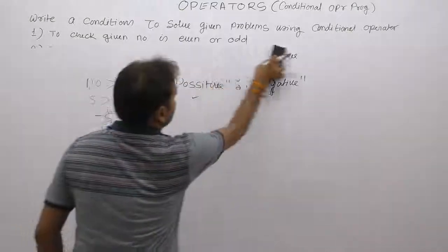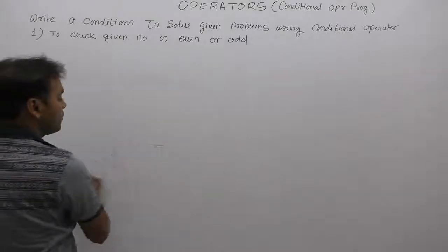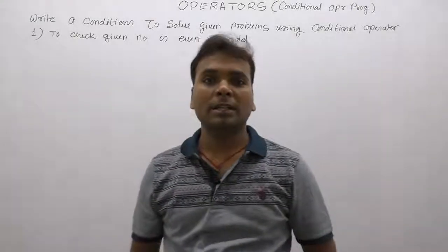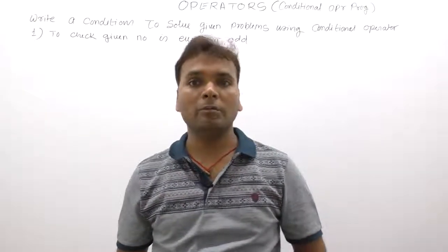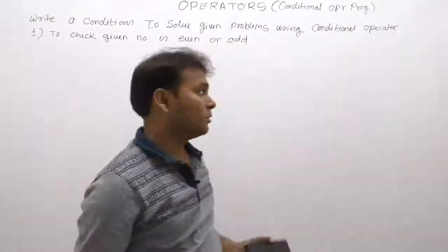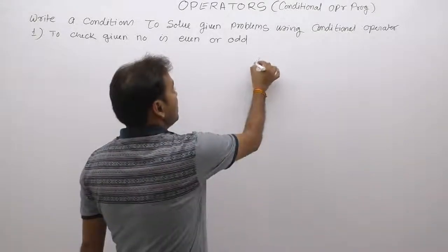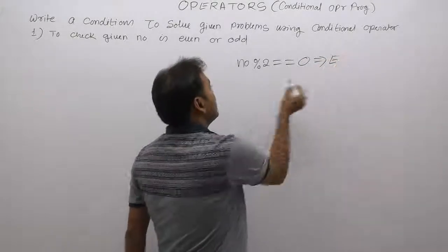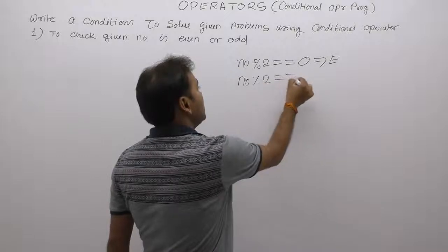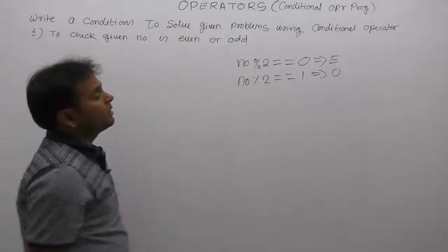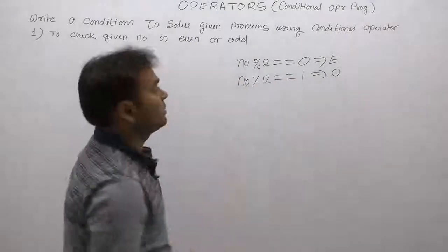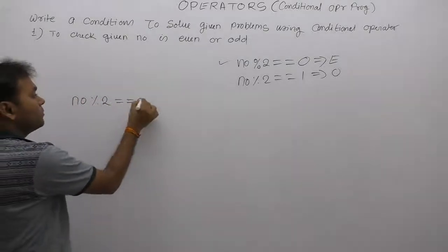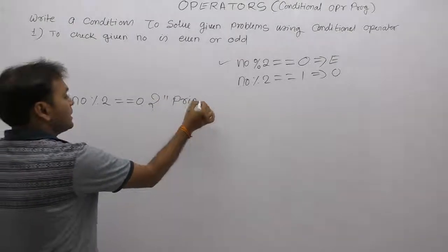Another expression: to check if a given number is even or odd. All even numbers are multiples of two — if a number is divisible by two, it is even, otherwise odd. If number modulo by two gives remainder zero, the number is even. If condition is true, display even, otherwise odd.